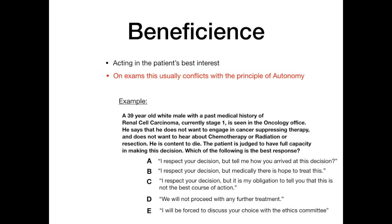A lot of these answers seem pretty good. If you're the physician in real life, you might say a combination of these things. But on a test, there's one answer. A lot of you are probably leaning towards choice A, but this is not the correct answer. Because in the question, the patient was already judged to have full capacity. As one of the criteria of capacity, the patient has to explain in a logical and linear fashion how they arrived at their decision. So A would be redundant. The correct answer is actually C.